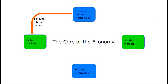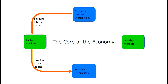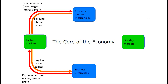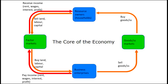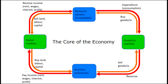The households own the resources but they don't produce goods and services; the businesses produce goods and services but they don't own the resources. So there is a flow from the resource owners — the households — through factor markets to businesses. That is, the businesses will purchase or hire land, labor, and capital from the households, and in exchange the households will be paid income in the form of rent, wages, interest, and profit.